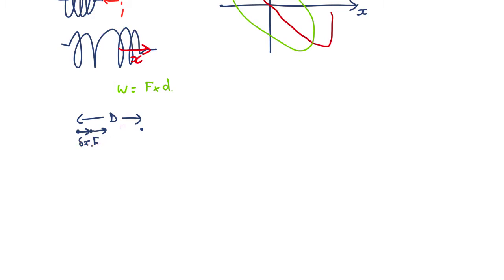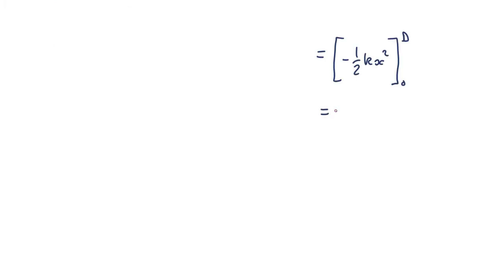So adding up lots of little f times dx. And that's what's called an integral. So the total energy is going to be the integral, starting from extension zero out to our full extension d of the force times the extension. That's just adding up the amount of work needed a little bit, each little bit. And the force is minus k times x, so that's the integral of minus kx dx, which is going to be minus 1/2 kx squared, from 0 to d.